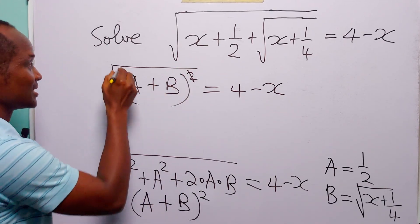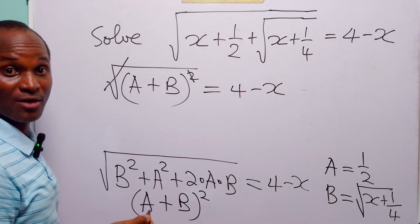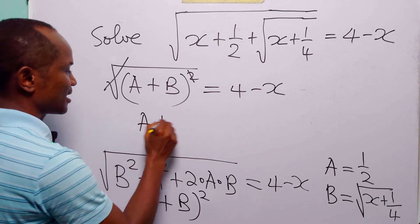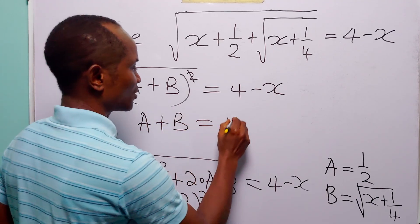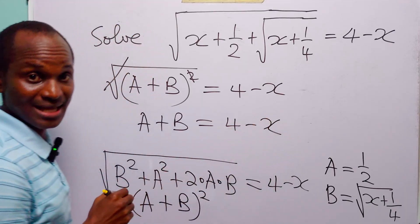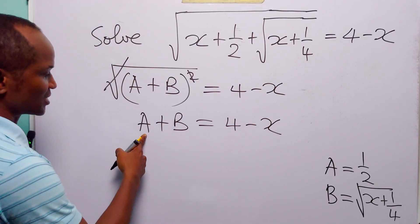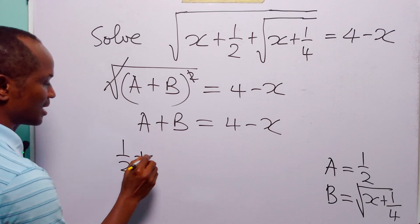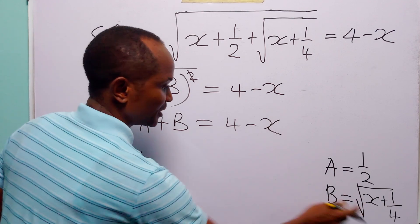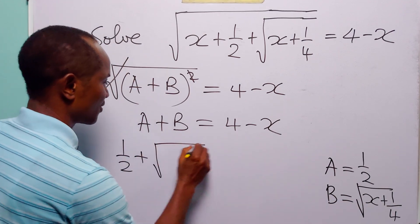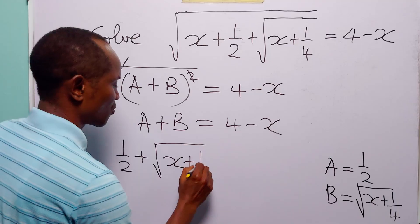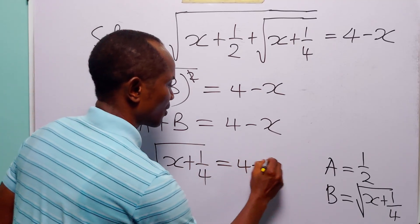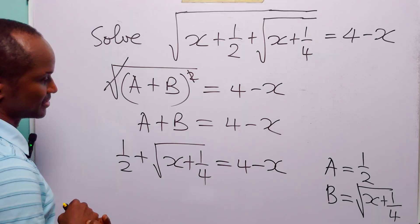On the right-hand side we still have 4 minus x. Here you can see that the square is going to cancel the square root, and we have a plus b is equal to 4 minus x, where a is one-half and b is the square root of x plus 1/4.